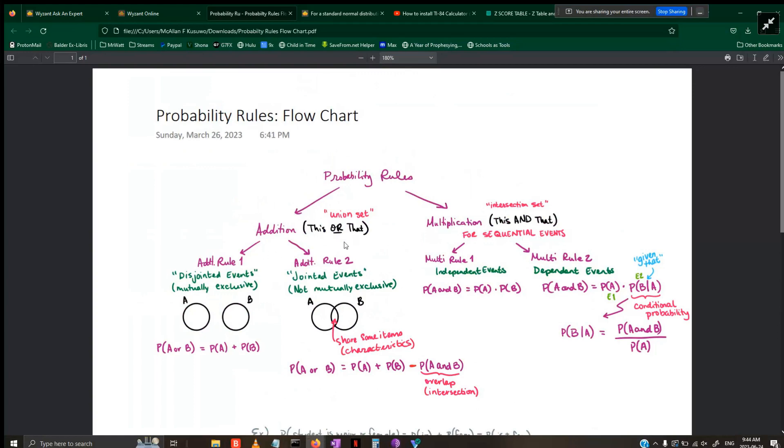You have addition and multiplication. I use phrases to help differentiate between the two utilizing keywords. For addition, the keyword is 'or.' For multiplication, it's 'and.' For example, you could have a statement that says find the probability that both—there's that word again referring to 'and.'